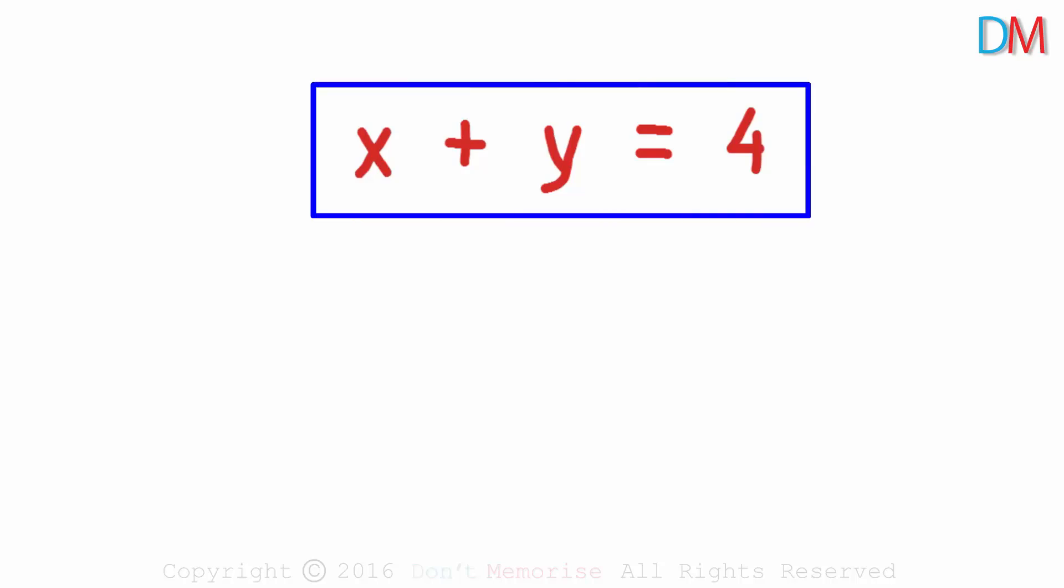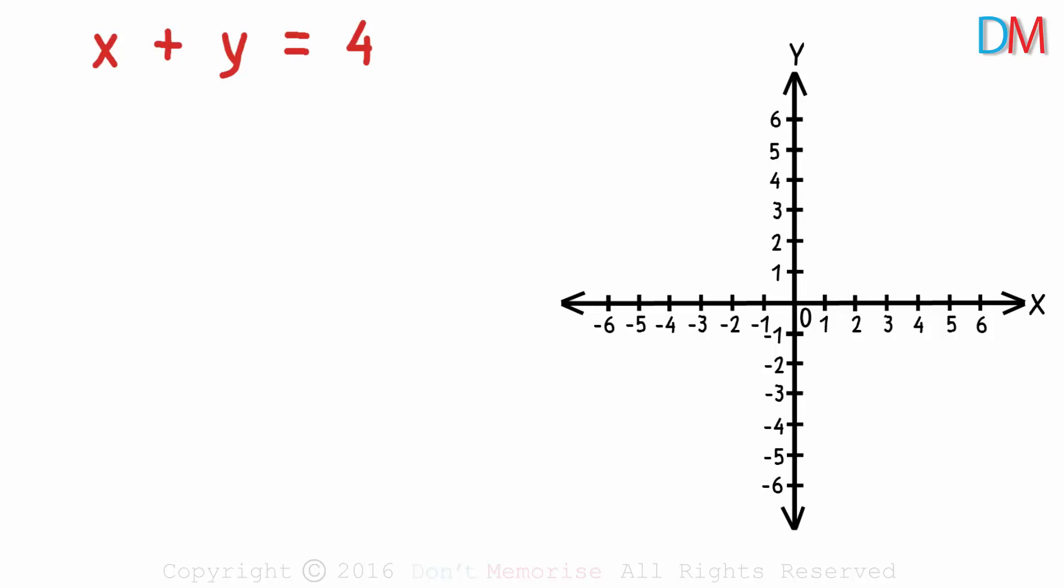It is a linear equation as the maximum power of any variable is 1 and it has two variables x and y. Now how can this be represented on a graph? Let's have the coordinate plane on the right hand side. It's very easy to represent this equation graphically.